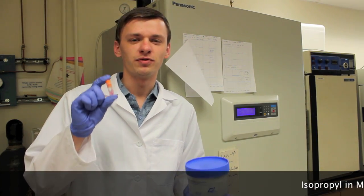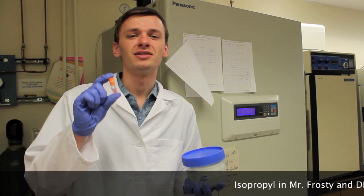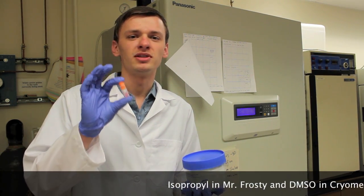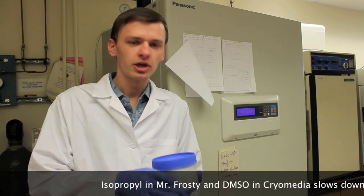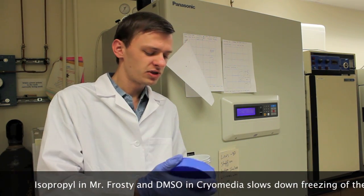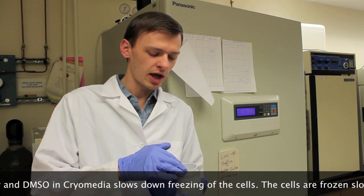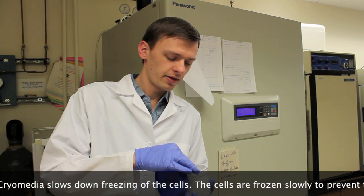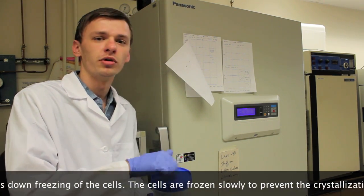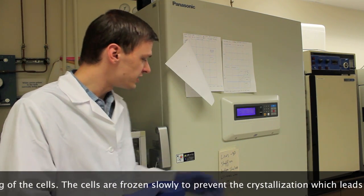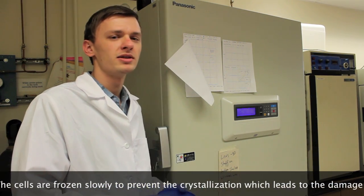After cells are ready for freezing, we want to freeze the cells slowly. So we're going to place the cryovial with cells in it into Mr. Frosty. Mr. Frosty contains isopropyl, which helps to slow down the freezing. Then we're going to place it into a freezer, which is going to freeze cells up to minus 80 Celsius.